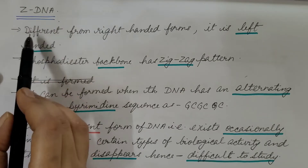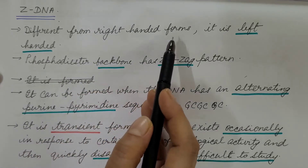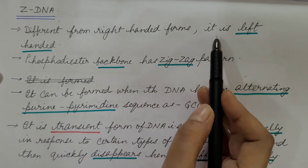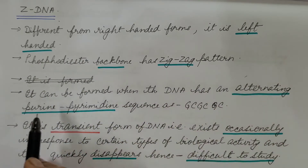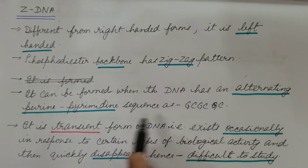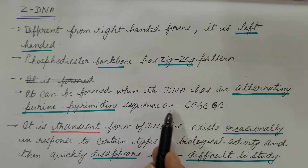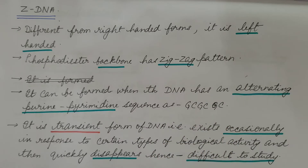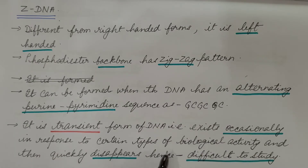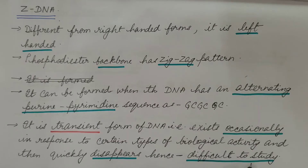Now let us see Z-DNA. It is different from the right-handed forms — A and B-DNA are right-handed, but Z-DNA is left-handed. Its phosphodiester backbone has a zig-zag pattern. Z-DNA can be formed when the DNA has an alternating purine-pyrimidine sequence, such as GC-GC repeats. Because G and C nucleotides have different conformations, this leads to the zig-zag pattern. Z-DNA is a transient form, existing occasionally in response to certain biological activity and then quickly disappearing, hence it is difficult to study.